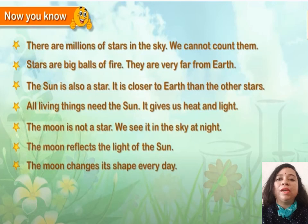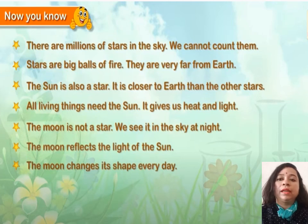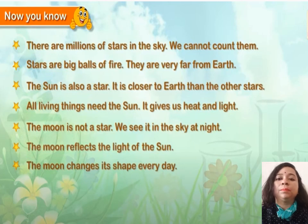Now children, you all are able to understand that there are millions of stars in the sky and we cannot count them. Stars are big balls of fire, very far from earth. The sun is also a star, closer to earth, and gives us heat and light. The moon is not a star — it is a natural satellite that reflects the light of the sun and changes its shape every day. We can also see groups or patterns of stars called constellations.